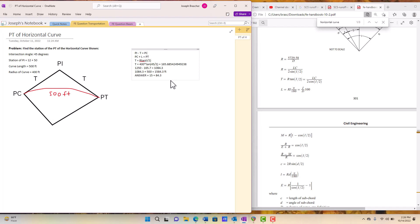So how did we solve this problem? Well, we determined what we had, we found what the problem was asking for, which was this PT. We already had the curve length, we had the radius of curve, but we didn't have this tangent length.